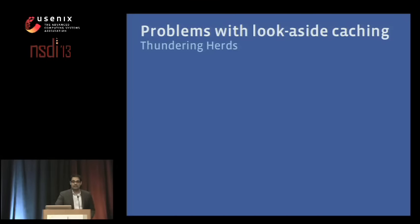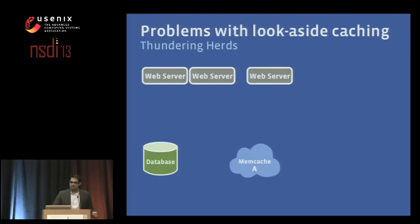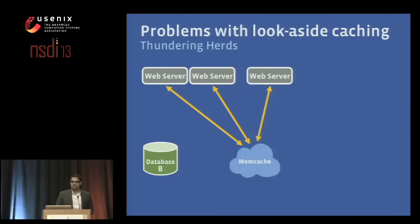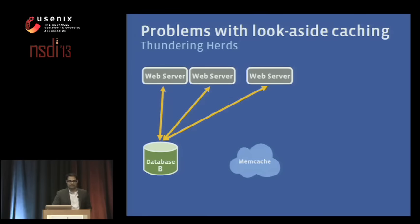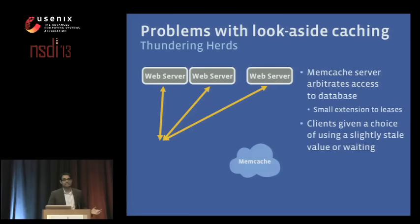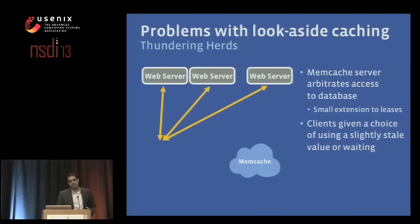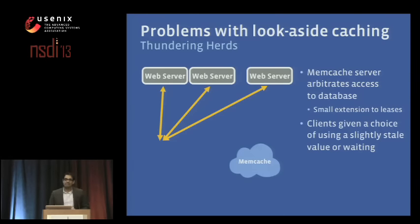Another interesting problem with look-aside caching is what we call thundering herds. You have a bunch of web servers all accessing a very popular piece of shared content — say a popular celebrity has posted something. Once the database value is updated, all servers see that the value doesn't exist in the cache and simultaneously access the database. With sufficient web servers, the database literally can't keep up and goes down — and anybody with data on that database, including user information, cannot use the site. So we extended leases to make the memcache servers arbitrate access to the database: the cache says, I know a lot of people just asked for this data, so hold off while someone else refills it.